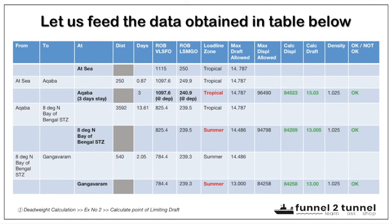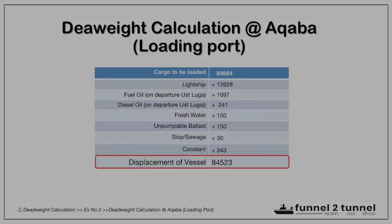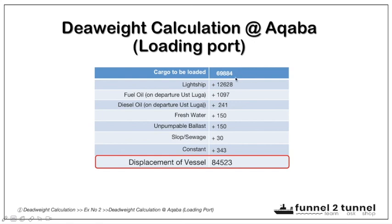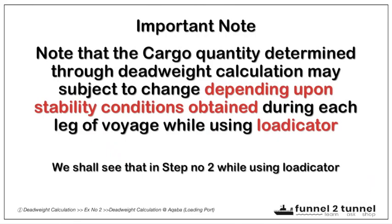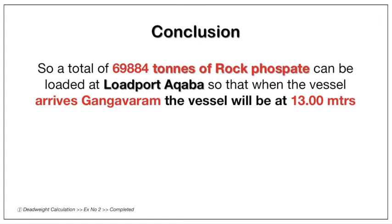The vessel is carrying the maximum amount of cargo that can be safely carried while complying with all load line zone requirements and port draft restrictions. The dead weight calculation at Akaba confirms cargo to be loaded is 69,844 tons — the departure displacement at load port Akaba has been calculated. Note that the cargo quantity determined through dead weight calculation may be subject to change depending on stability conditions obtained during each leg of voyage when using the loadicator — this will be examined in step two.